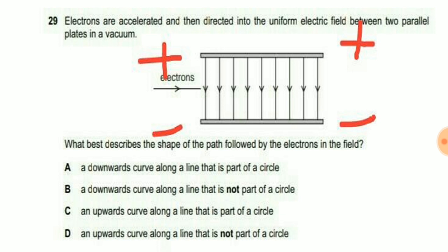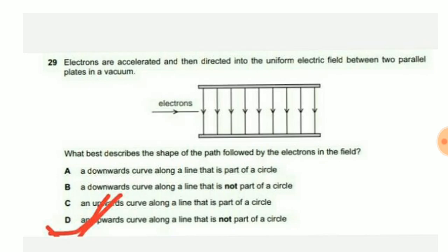Motion or path of electrons in a magnetic field is circular. In this question there is an electric field, so our option choice should contain the motion of electrons towards the upward direction and the path is not a circle. If you see your option choices, then option choice D is the right answer because in A and B it is said that downward direction, which is not possible.